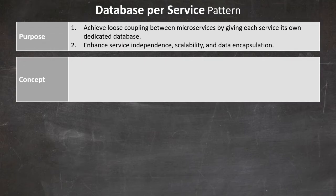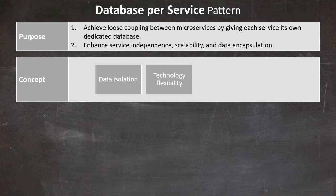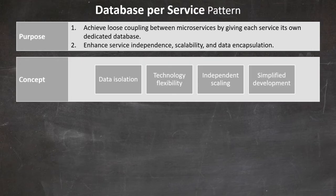Key aspects of this pattern include data isolation — each service's data is isolated, reducing dependencies between services. Technology flexibility allows services to utilize different database technologies tailored to their specific needs. Independent scaling means databases can be scaled independently based on the requirements of each service. Simplified development lets developers concentrate on a single service and its data model without worrying about impacts on other services.